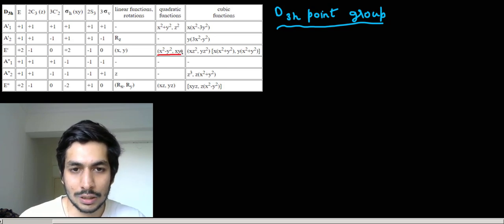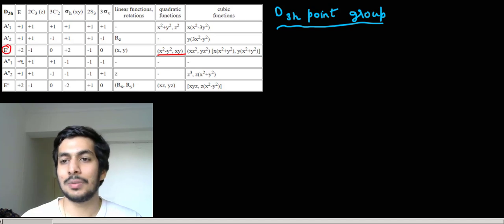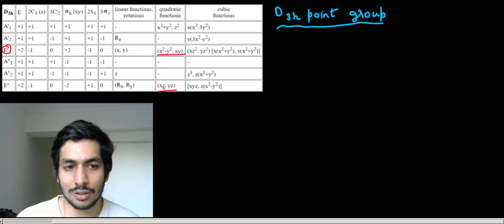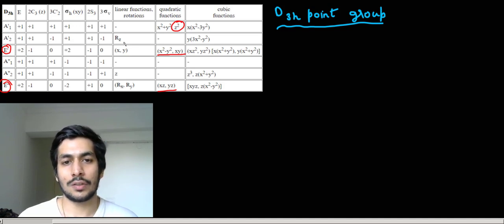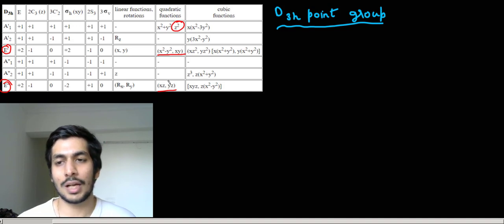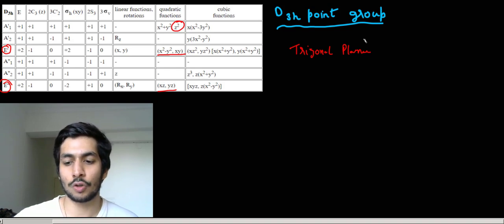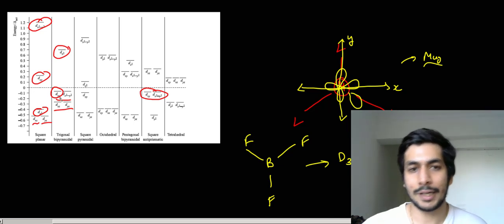If you look at the character table of D3h, something very peculiar appears: x²-y² and xy belong to the same Mulliken symbol under the quadratic functions column. That means they have the same symmetry and are therefore degenerate in the D3h point group. Similarly, xz and yz are degenerate, and z² belongs to its own Mulliken symbol — giving three distinct energy levels. D3h applies to both trigonal planar and trigonal bipyramidal geometries, which is why xy and x²-y² are of equal energy in both.